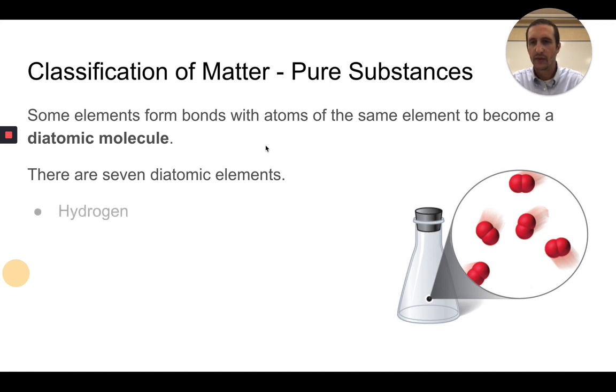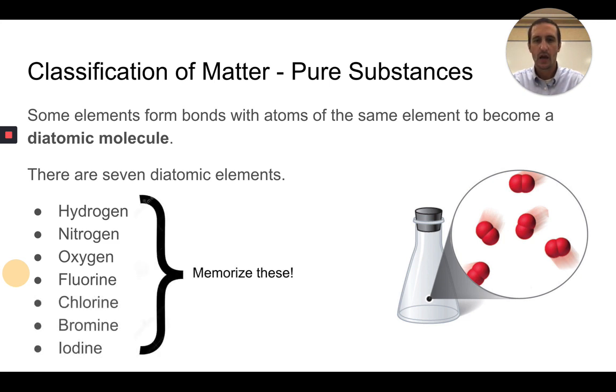It turns out that there are seven diatomic elements. They are hydrogen, nitrogen, oxygen, fluorine, chlorine, bromine, and iodine. I would recommend that you take some time to memorize what these seven diatomic elements are.